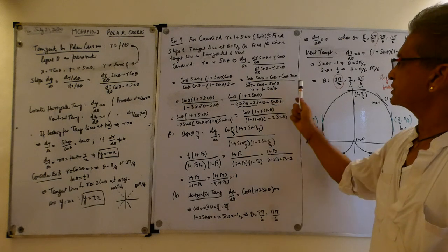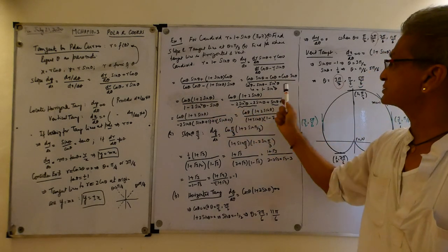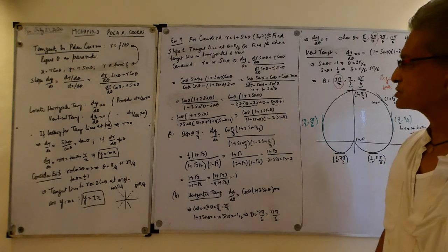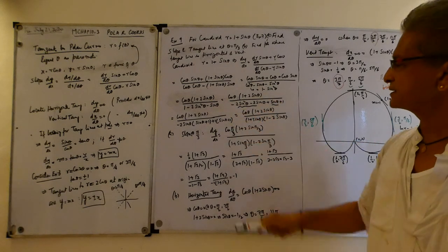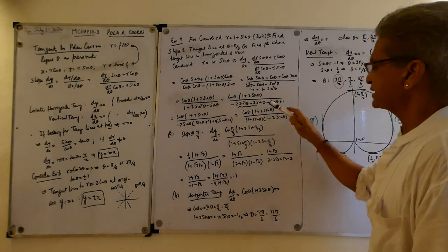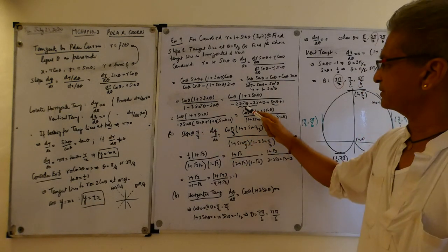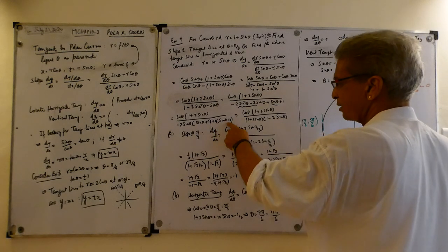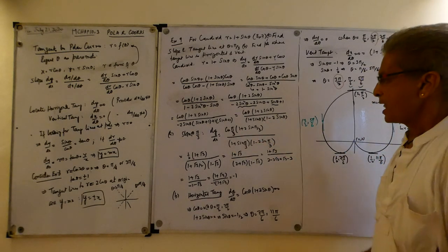Writing cos²θ as 1 minus sin²θ, the numerator becomes cosθ(1 + 2sinθ) and the denominator becomes 1 minus 2sin²θ minus sinθ. Rewriting: minus 2sin²θ minus sinθ equals minus 2sinθ·(sinθ + 1) plus (sinθ + 1), so factoring out (1 + sinθ) gives the denominator as (1 + sinθ)(1 - 2sinθ). So dy/dx equals cosθ(1 + 2sinθ) divided by (1 + sinθ)(1 - 2sinθ).